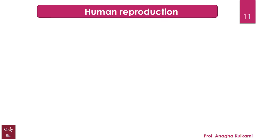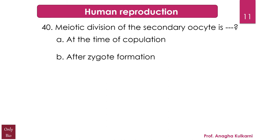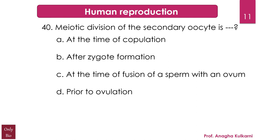The next question relates to Human Reproduction. Meiotic division of the secondary oocyte is — A) at the time of copulation, B) after zygote formation, C) at the time of fusion of a sperm with an ovum, D) prior to ovulation. The correct answer is C. In meiosis I, a diploid cell becomes two haploid daughter cells; one becomes the secondary oocyte and the other forms the first polar body. The secondary oocyte then commences meiosis II and is arrested at metaphase II. The second meiotic division is completed by the entry of sperm into the secondary oocyte in the fallopian tube, after which it is called the ovum. Like, subscribe, and hit the bell icon — thank you!